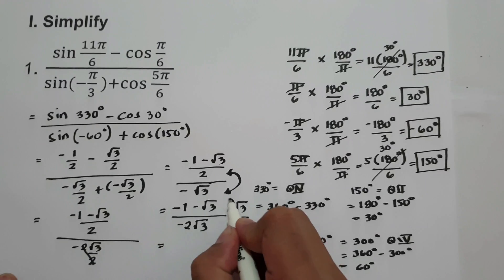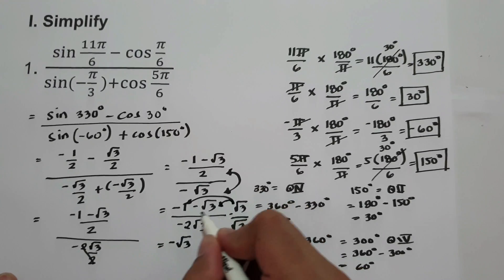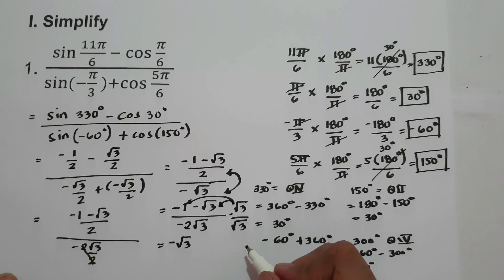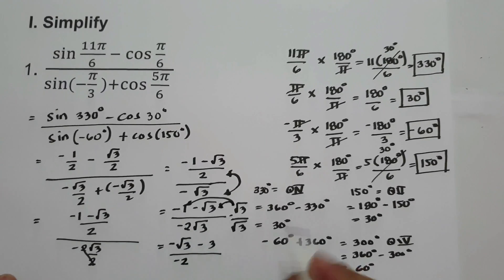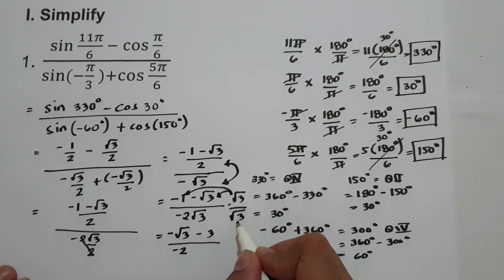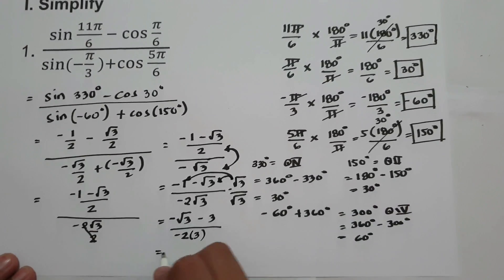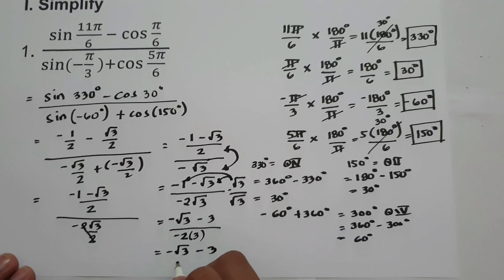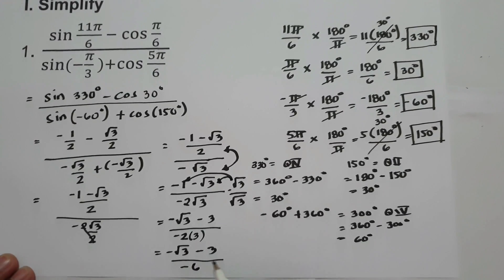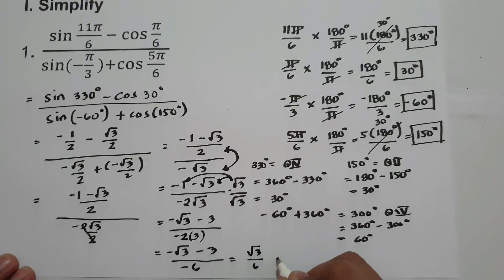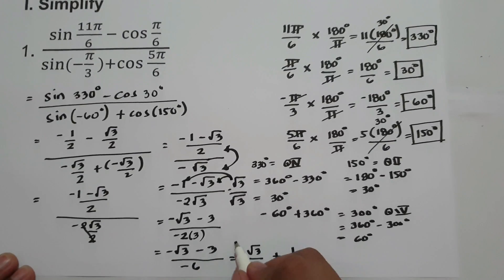Let us rationalize by multiplying the numerator and denominator by square root of 3 to eliminate the radical in the denominator. Square root of 3 times negative 1 is negative square root of 3, and square root of 3 times negative square root of 3 is negative square root of 9, which equals negative 3. The denominator becomes negative 2 times 3 equals negative 6. So we have negative square root of 3 minus 3 over negative 6, which simplifies to square root of 3 over 6 plus 1/2, since negative divided by negative is positive.